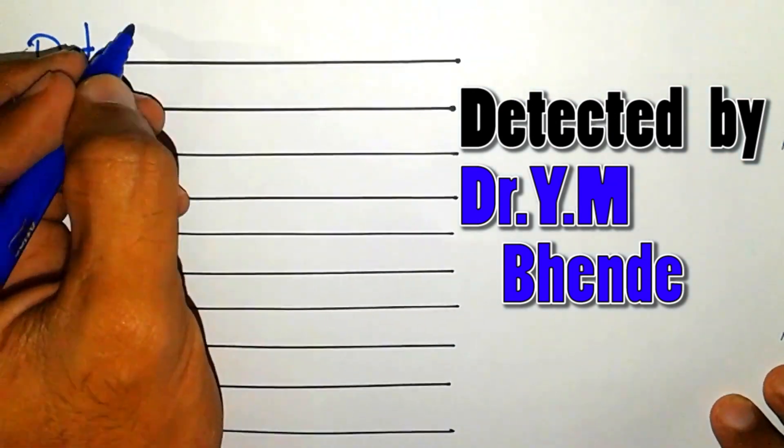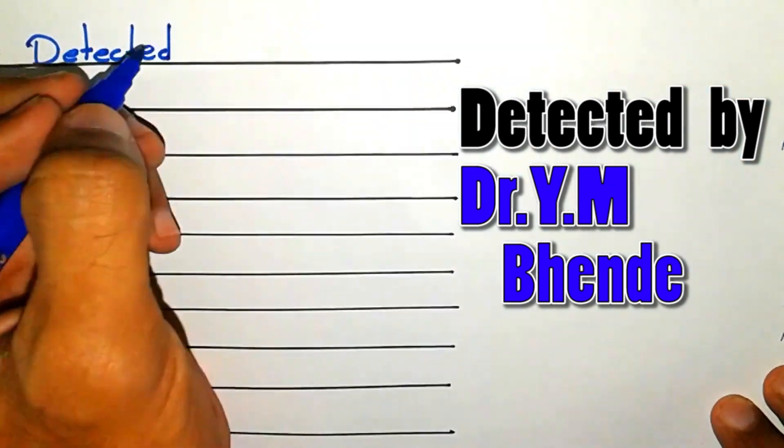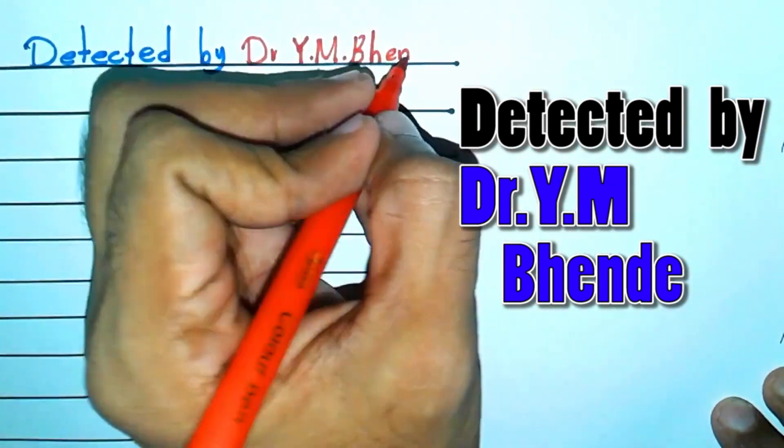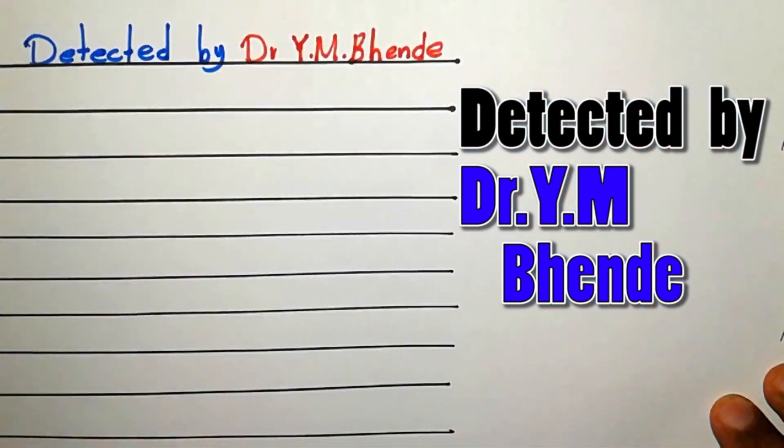The Bombay blood group was detected by Dr. YM Bendy in Bombay in 1952, in a Parsi community.